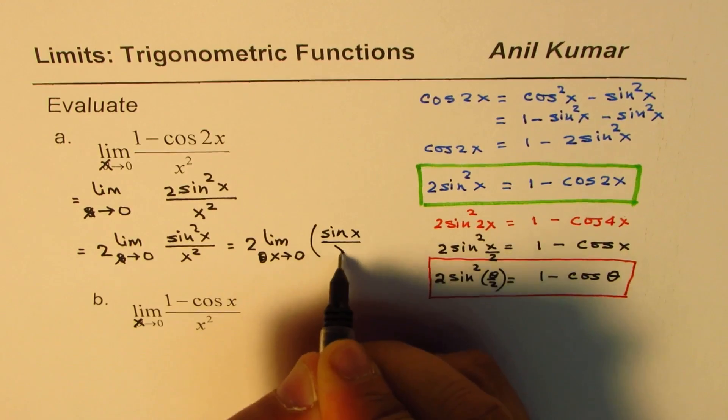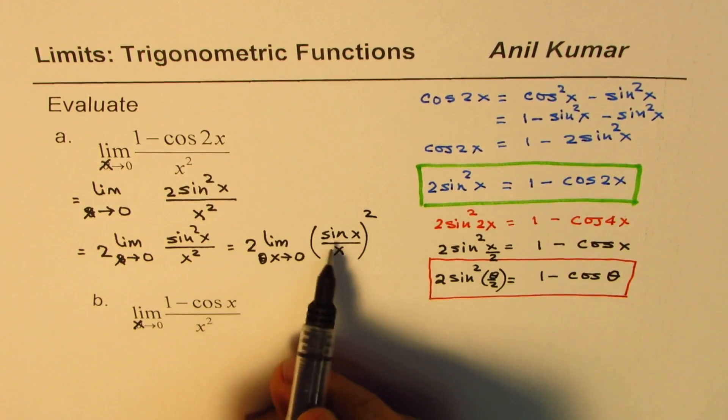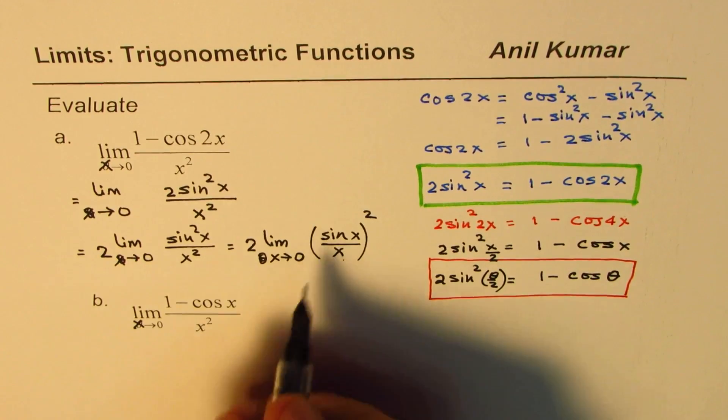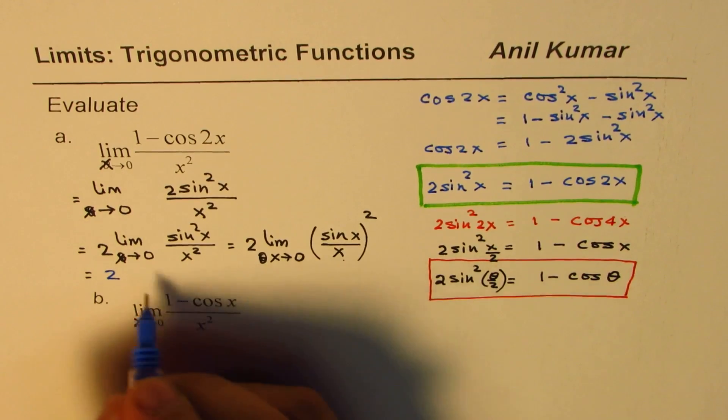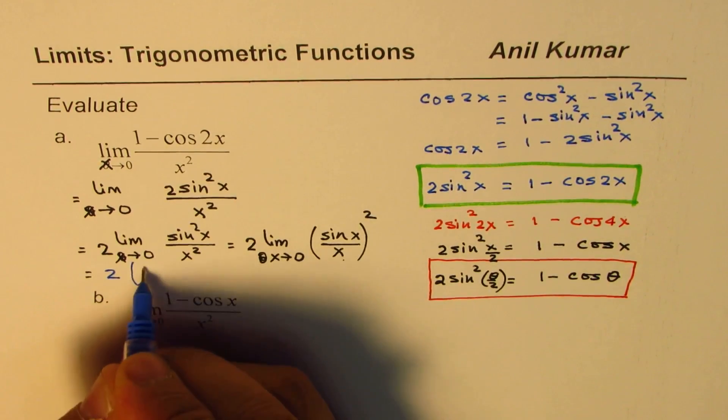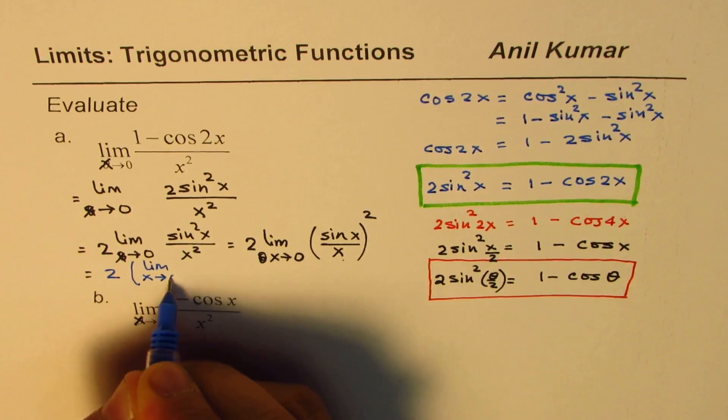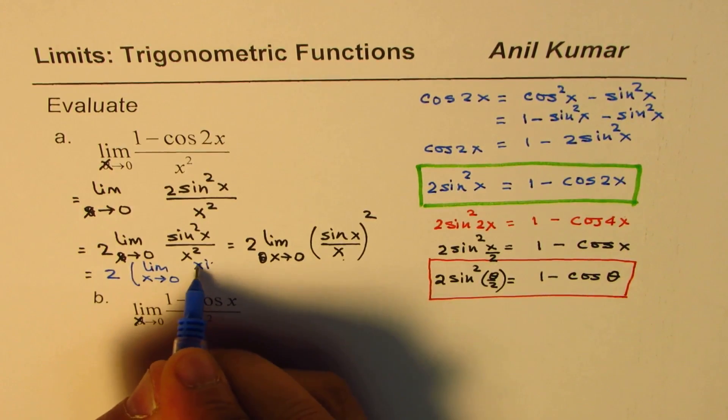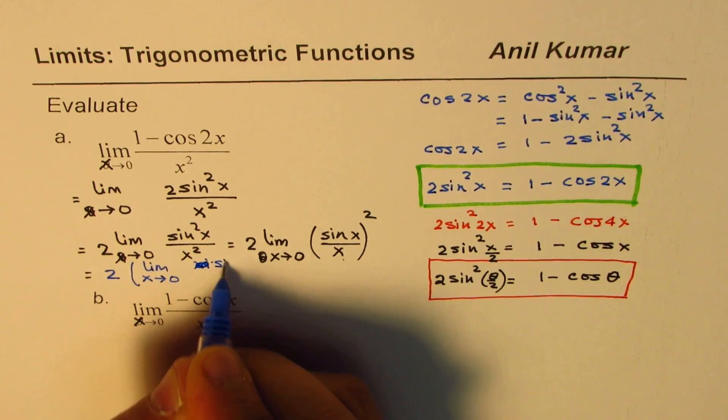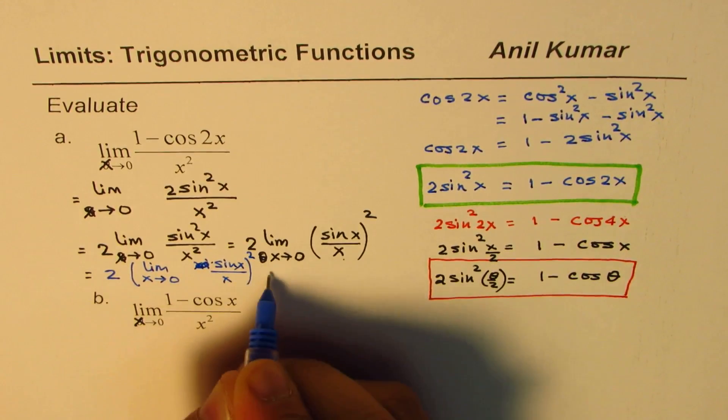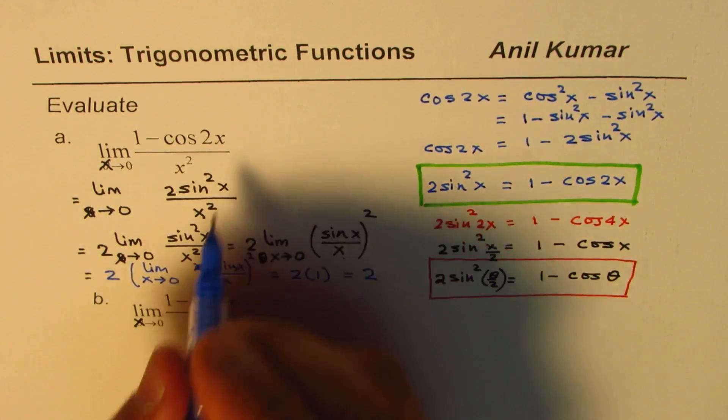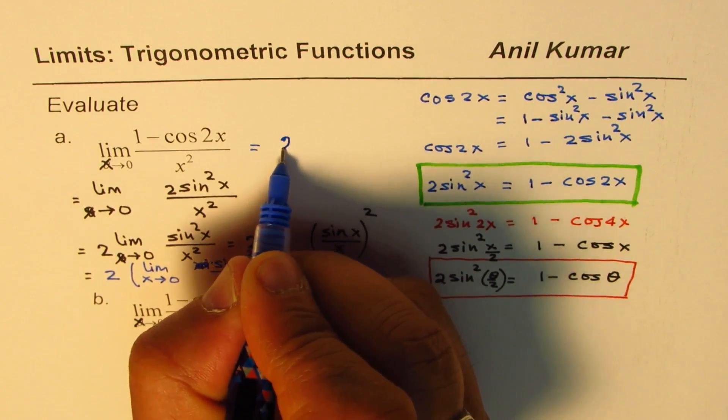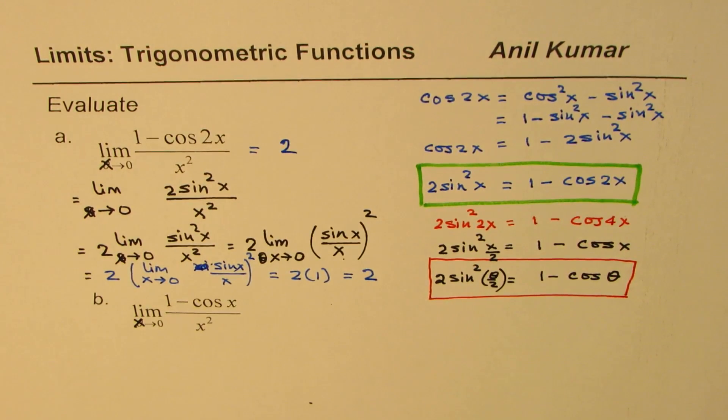For (sin x / x)². Now that is, limit of this is 1. So this could be written as 2 times limit x approaches 0 for (sin x / x)². And that is, this is 1. So it is 2 times 1, and so you get 2 as your answer. So we could write this as equals 2. So that is how you can find limit of this function. I hope the steps are clear to you.